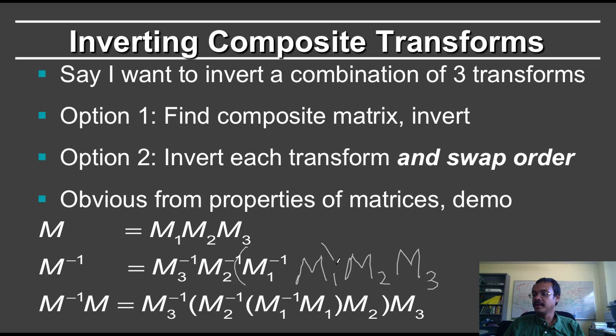Okay, but now if you look at M1 inverse M1, which is what I've done here, that's equal to the identity. Then you look at M2 inverse M2, that's equal to the identity. And finally M3 inverse M3, which is the identity.